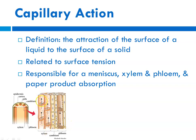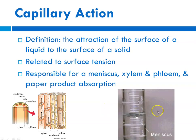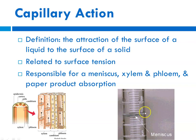Xylem is capillary action moving water up from, for instance, the ground. Phloem is the liquid flowing down. And in our graduated cylinder, the attraction of water to the surface of the glass is what causes the meniscus to form.